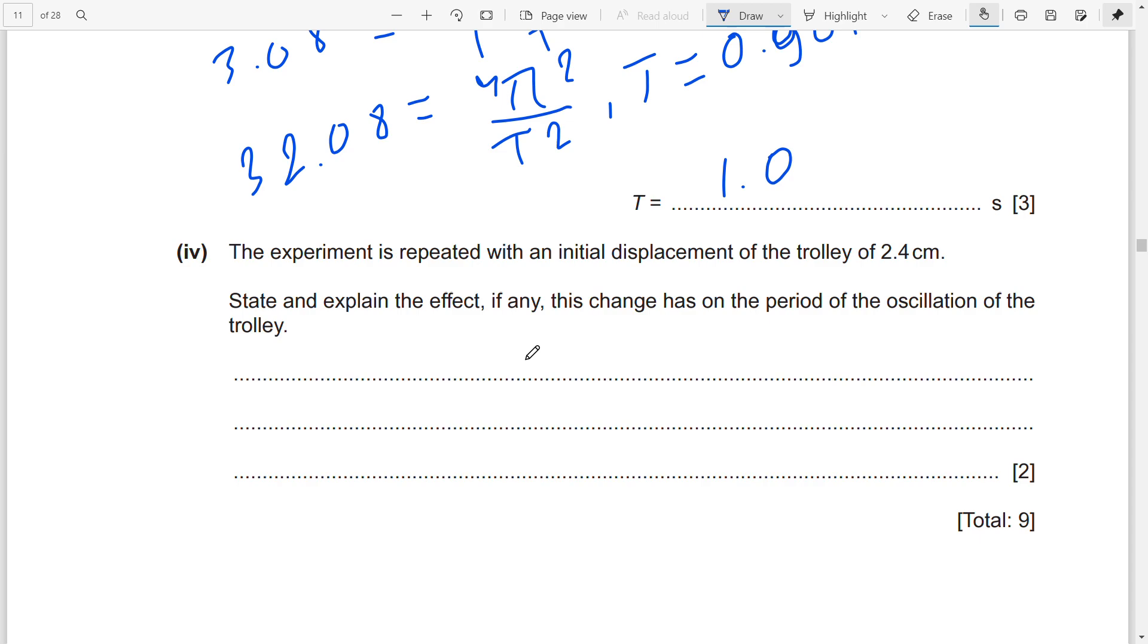The experiment is repeated with an initial displacement of the trolley of 2.4 centimeters. For this question, what you can write is that less displacement causes less time period and velocity increases. So you can write: less displacement causes less time period and velocity increasing. I'll just write this in short form; you can write it in full form.